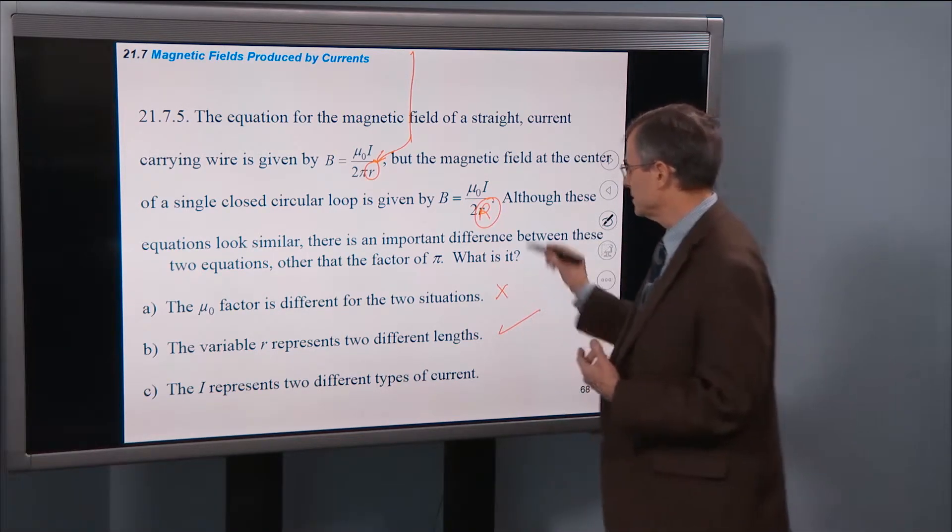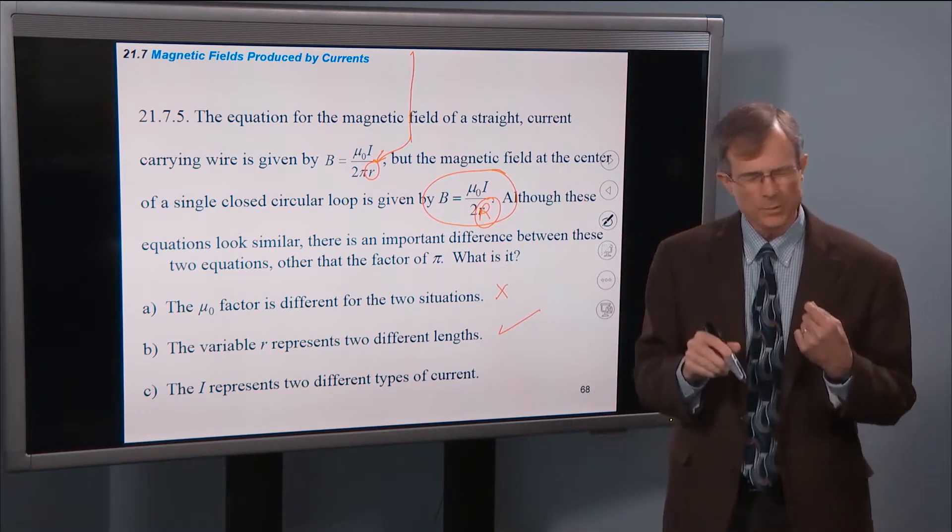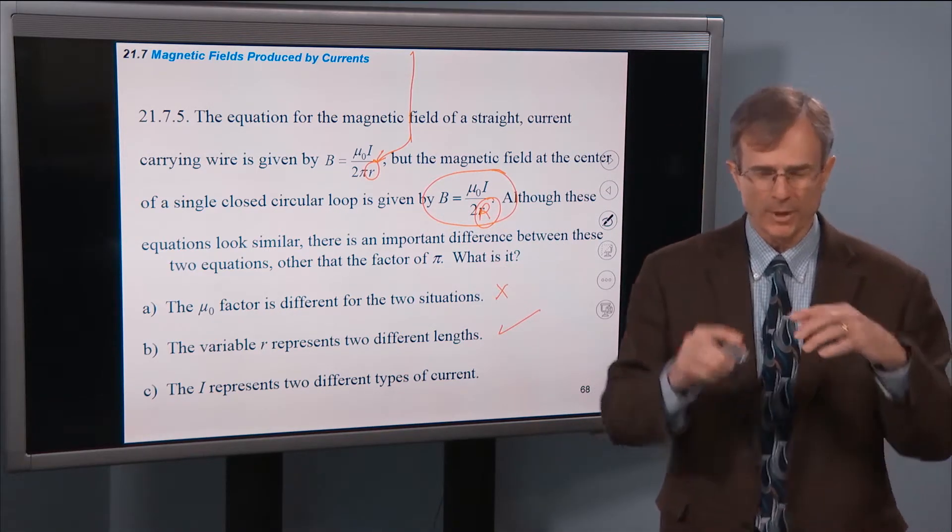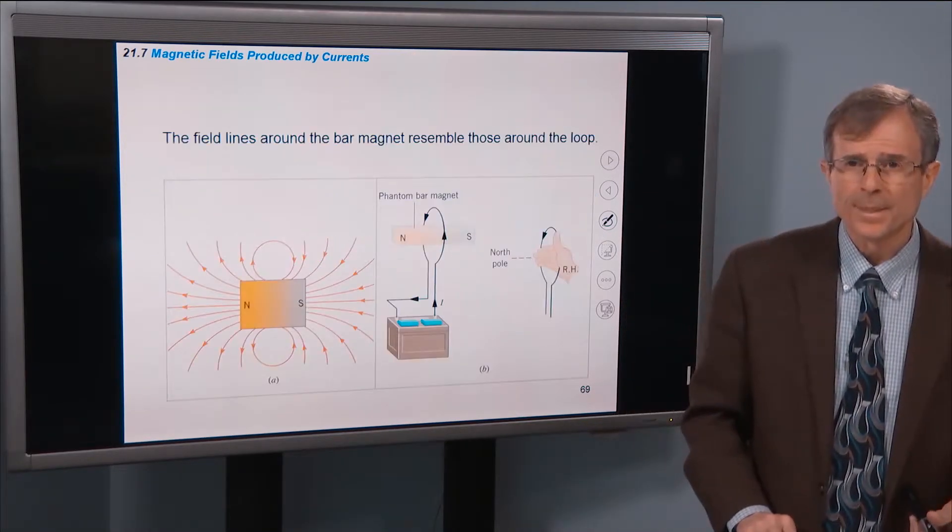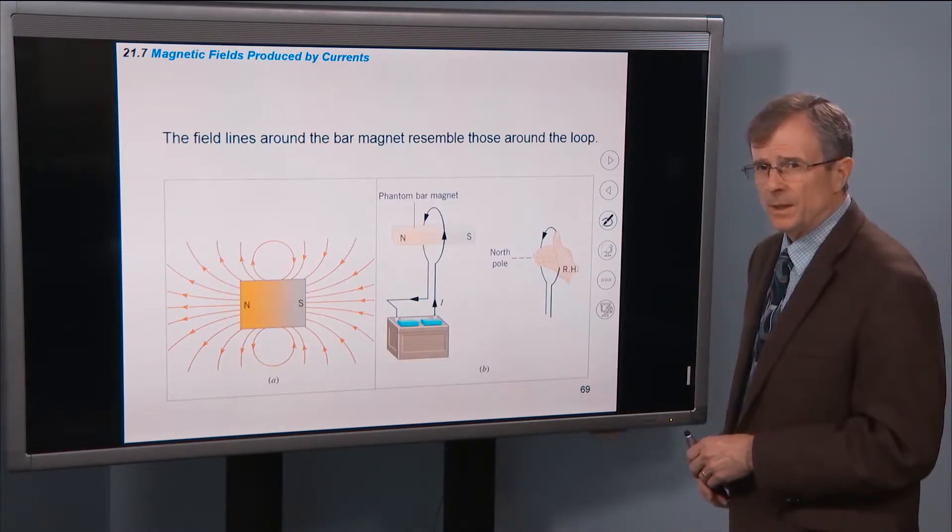And this equation actually just gives you the magnetic field at a single point, right at the center of that wire loop. Alright?